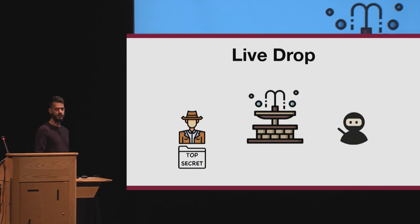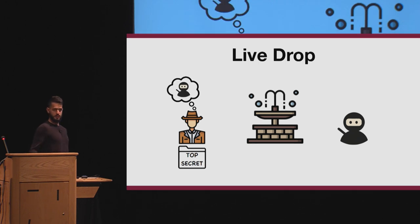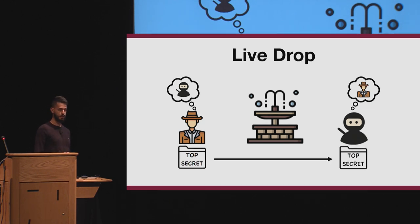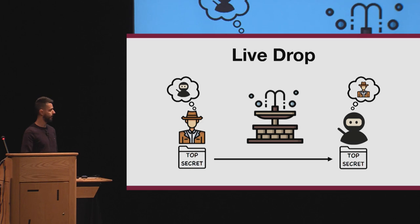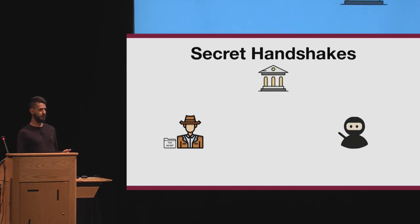A way to do that is a live drop: they choose a public place and meet there. The detective knows he's looking for a ninja, and the ninja is looking for a detective, and when they meet, the detective can give the top secret information to the other party. It's called 'live' because both parties need to interact at the same time. From a cryptographic point of view, there is a scheme that implements such a live drop, called secret handshake — it's a key exchange protocol.